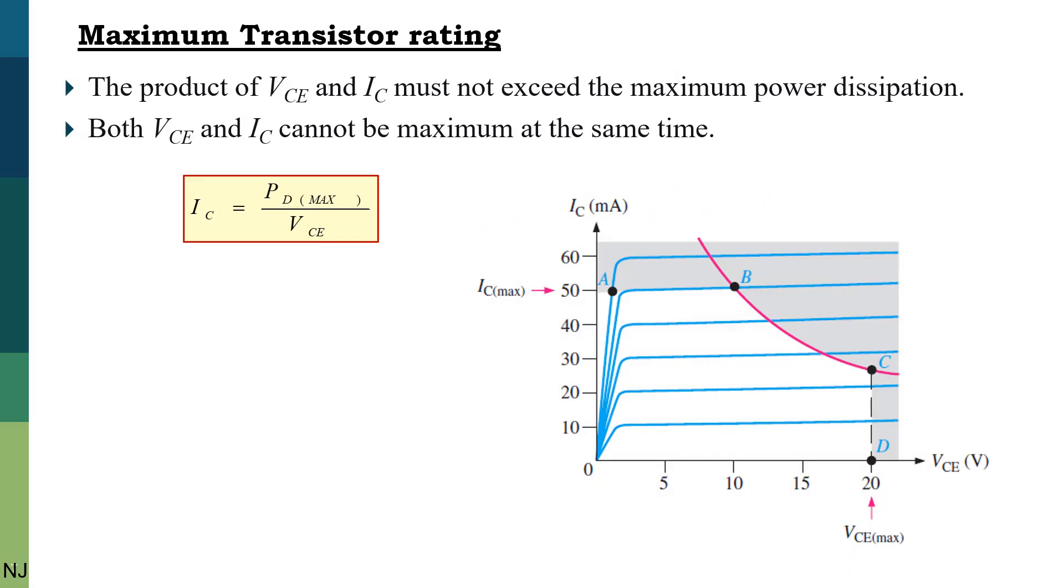Just like any other electronic device, the transistor also has limitations on its operation. The maximum transistor rating is the limitation of the transistor, which is normally stated in the manufacturer's datasheet. Typically the maximum ratings are given for the collector current IC, the collector to emitter voltage VCE, and finally for the power dissipation.